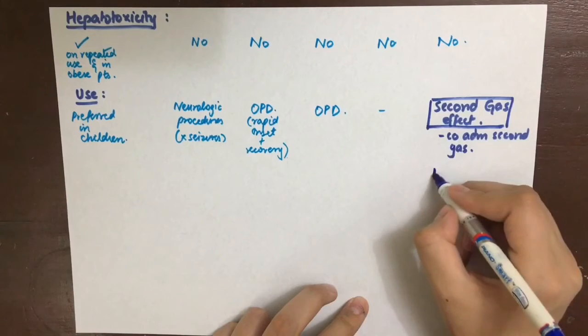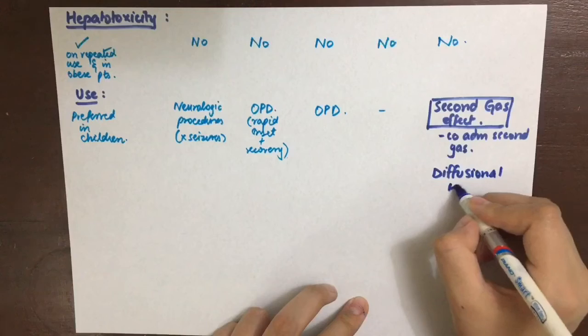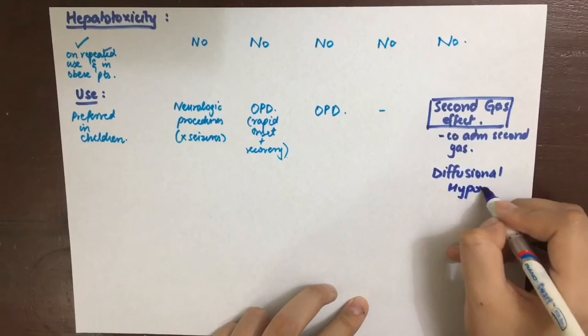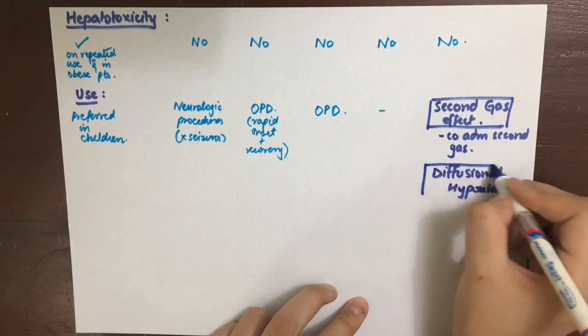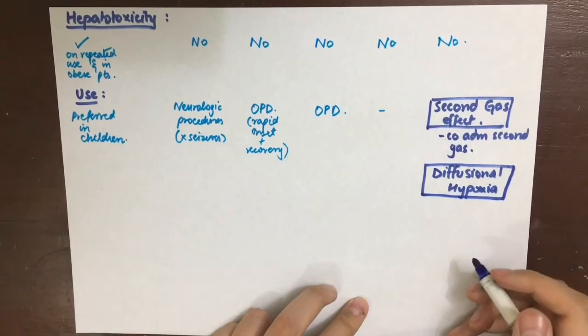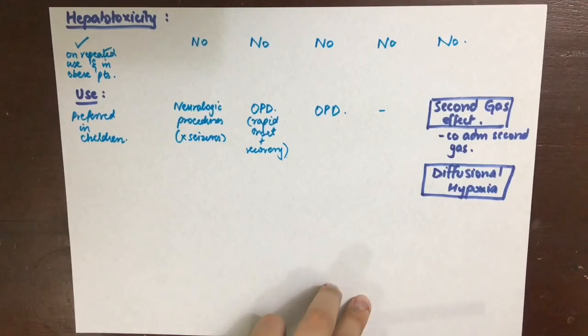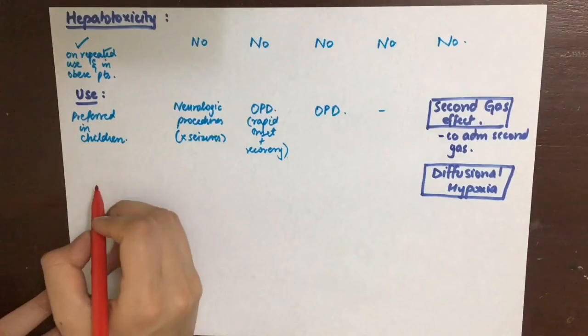The second effect is diffusional hypoxia. After the operation ends, when nitrous oxide supply is cut off, as nitrous oxide has decreased affinity for blood, it rapidly leaves blood and fills the alveoli and causes the partial pressure of oxygen to decrease, leading to hypoxia. To counteract this, the anesthetician will give 100% oxygen for some time after the surgery is over. Normally, during the procedure, the oxygen is about 30% and the other 70% is the anesthesia.